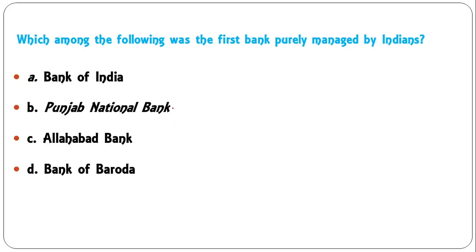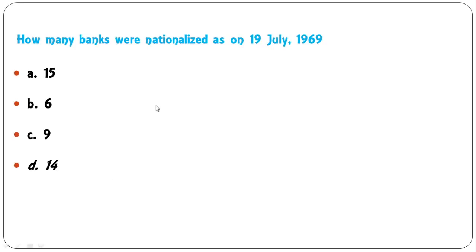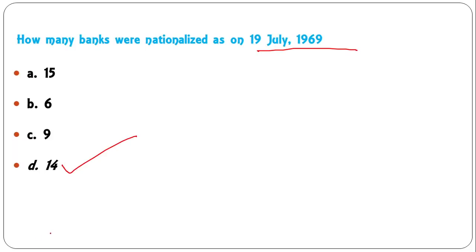Which among the following was the first bank purely managed by Indians — Bank of India, Punjab National Bank, Allahabad Bank, or Bank of Baroda? The first bank purely managed by Indians was Punjab National Bank, PNB.